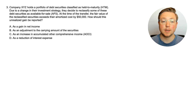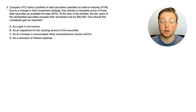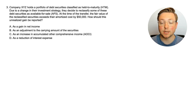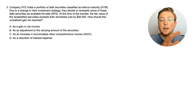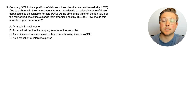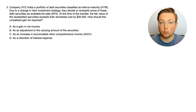Here we are at question three. Company XYZ holds a portfolio of debt securities classified as held to maturity, or HTM. Due to a change in their investment strategy, they decide to reclassify some of these debt securities as available for sale. At the time of the transfer, the fair value of the reclassified securities exceeds their amortized cost by $50,000. How should this unrealized gain be reported?